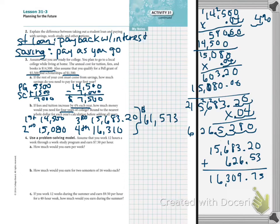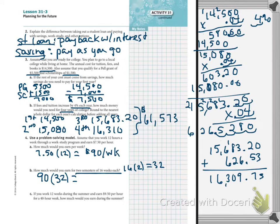Assume you work 12 hours a week through a work study and you earn $7.50 an hour. How much would you earn each week? Well, if we make $7.50 an hour, we work 12 hours a week. If we multiply that, we get $90 a week that we make. How much would you earn for two semesters of 16 weeks each? So, we're going to have to say 16 times 2, that's 32 weeks. If we make $90 a week for 32 weeks, that's going to be $2,880.